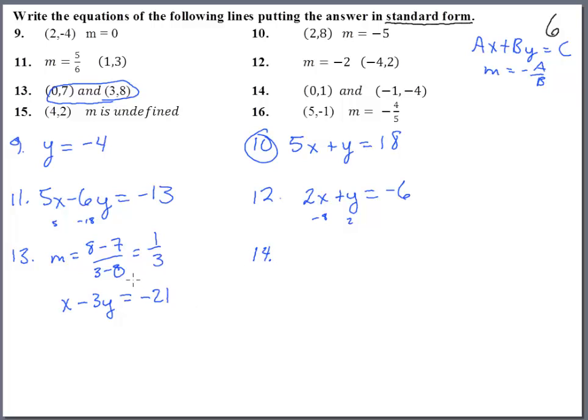Number fourteen - maybe we should put a box around that one. Number fourteen, we have the points (0,1) and (-1,4). Here we have the slope is y minus y over x minus x. That gives us five over one.